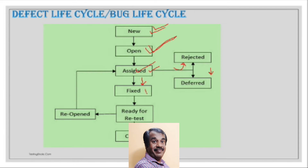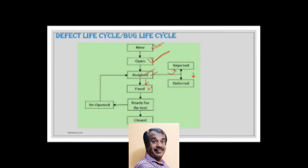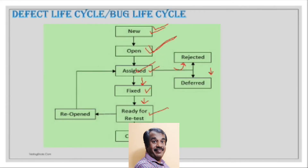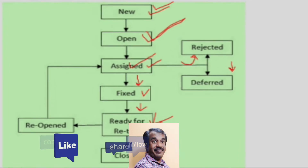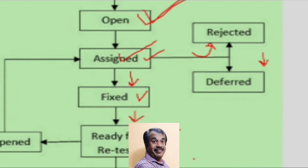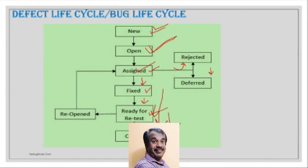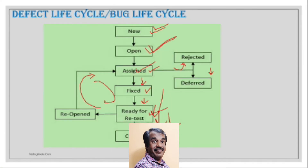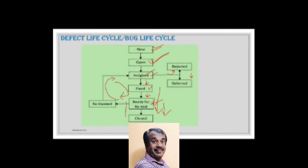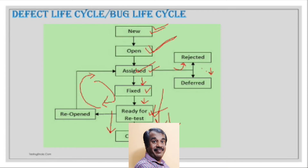If the defect is genuine and needs to be fixed, once the developer marks it as fixed, it moves to Ready for Retest. The tester picks it up, takes a new build, and retests. If fixed properly, it is marked Closed; if not working, it is Reopened and the cycle continues until fixed or deferred.